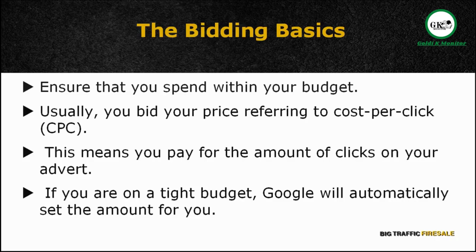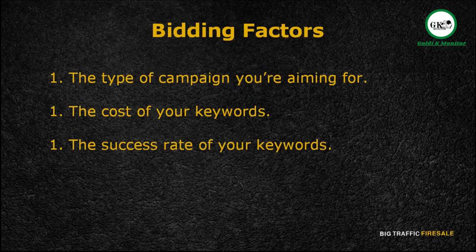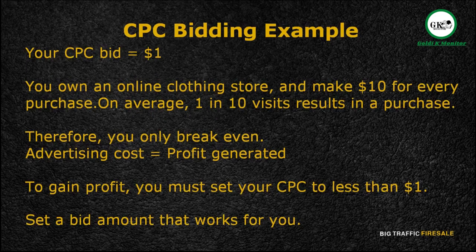Google will then provide you the most possible clicks within your budget. There is no fixed rule for the bid amount you should be paying — different people will have different bidding prices, and it depends on three important factors: the type of campaign you're aiming for, the cost of your keywords, and the success rate of your keywords. For example, let's say you've set your CPC bid to $1. You own an online clothing line shop, and you make $10 from every purchase. On average, 1 in 10 visits results in a purchase. As a result, you only break even. Therefore, to gain profit, your CPC should cost you less than $1.